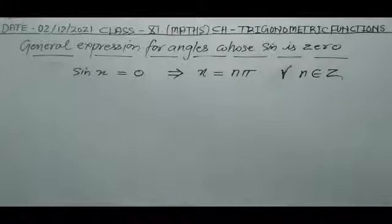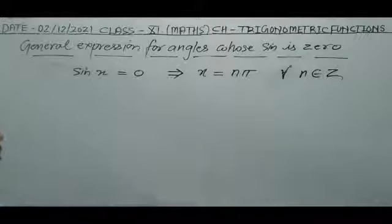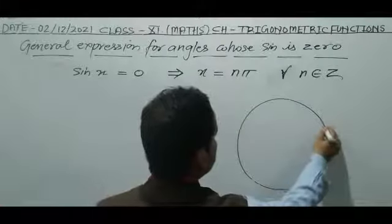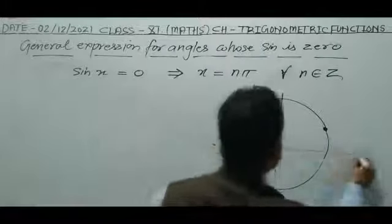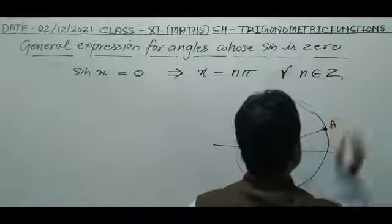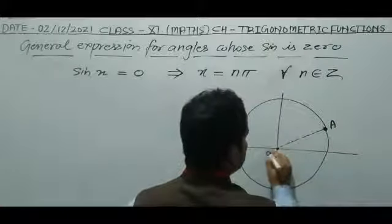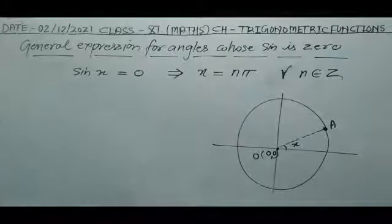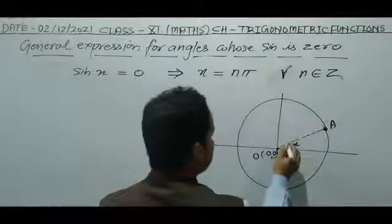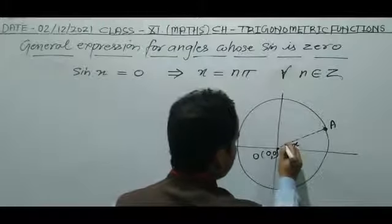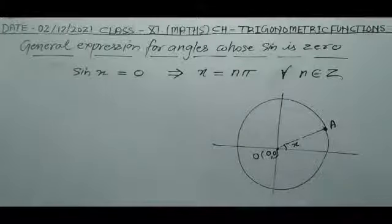To see how this result comes, suppose any point P is moving around a circle. At any instant, the position of point P is at point A with respect to the origin, and this point is making an angle x. After a 360-degree revolution, P will come back to point A.